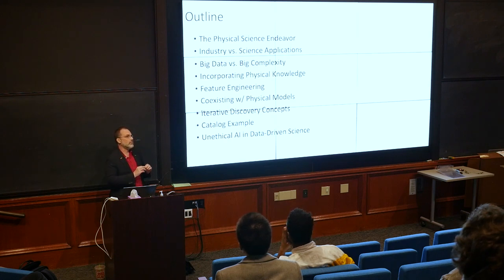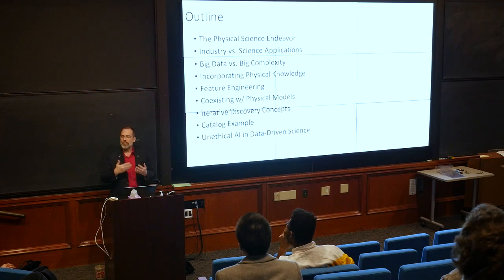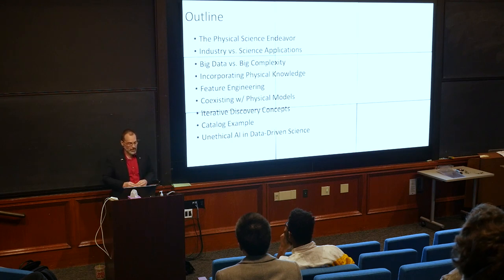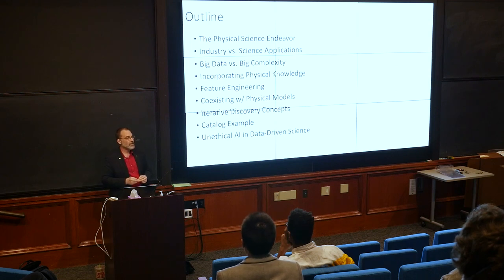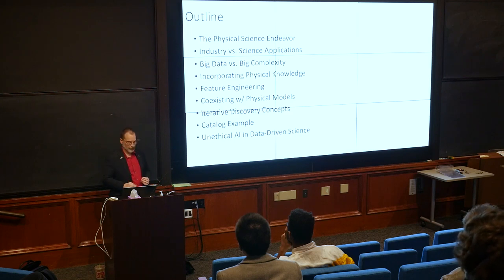I'll talk about feature engineering — a simple way to tell machine learning what you already know, so it doesn't bother learning it — and a more complicated way of coexisting with a sophisticated first-principles physics model. Then the iterative discovery concept: not training one ML model once and calling it science, but training multiple models that slowly reveal things about your data for discovery purposes. I'll cover catalog science, which all science fields either are in or have passed through, and finally an example of what I call unethical AI uses — not the typical ones about facial recognition bias, but about how you can accidentally lie to yourself while intending to do good.